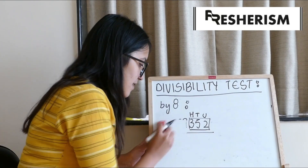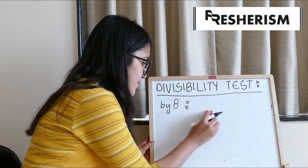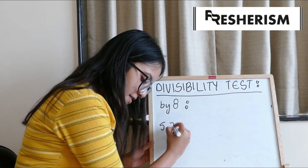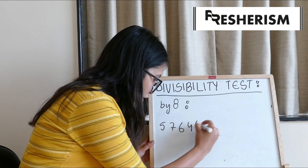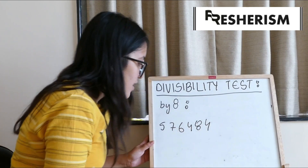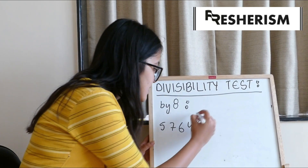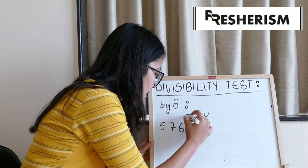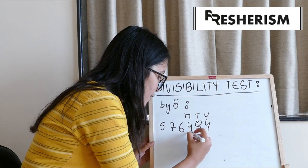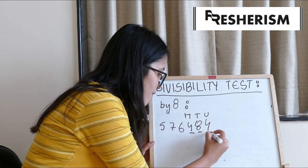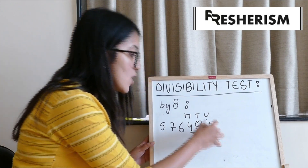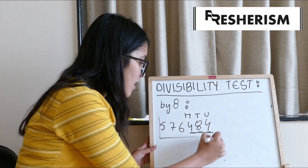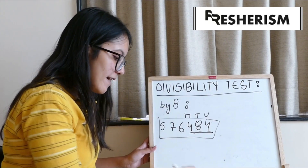Let us take another example: 576,484. The digits at its units, tens and hundreds place are 4, 8 and 4, which make 484. We know that 484 is not divisible by 8. Hence, this whole number won't be divisible by 8.